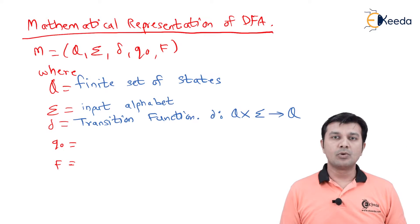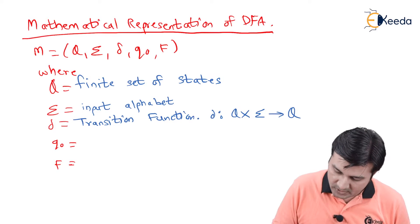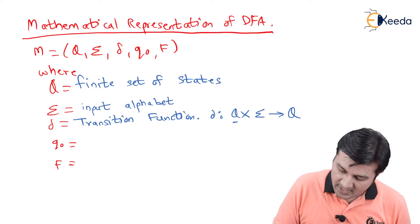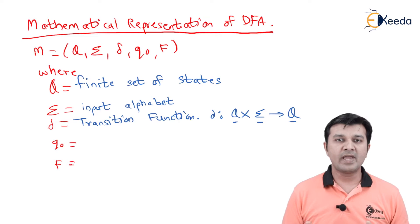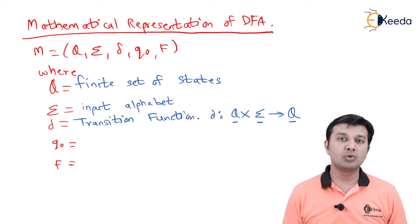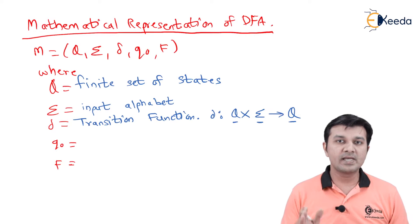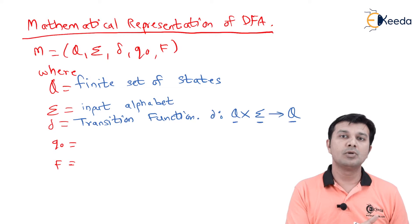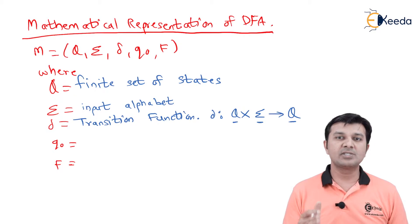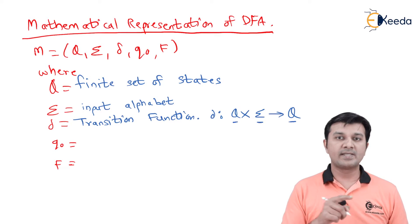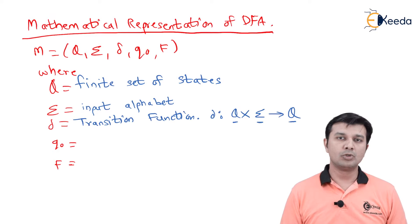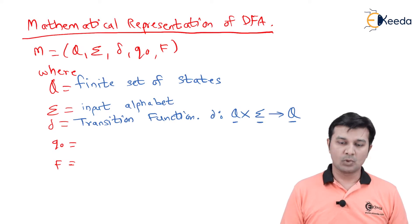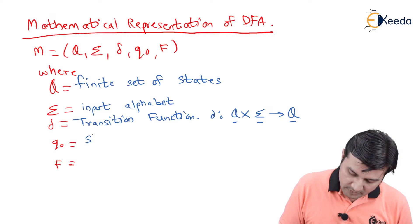When I say Q × Σ → Q, I mean: given a state and an input symbol, what is the next state? My FSM also works in the same manner — the state function says, given a state and an input, what is the next state? S × I → new S. Here that S is called capital Q, input is called Σ, and the new state we get is again called Q.